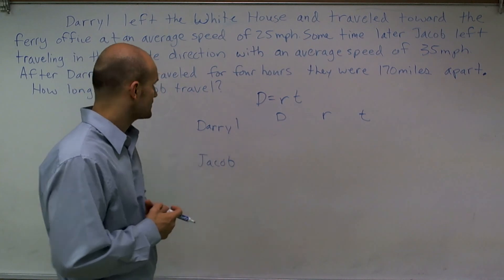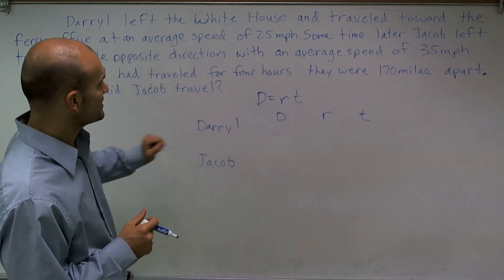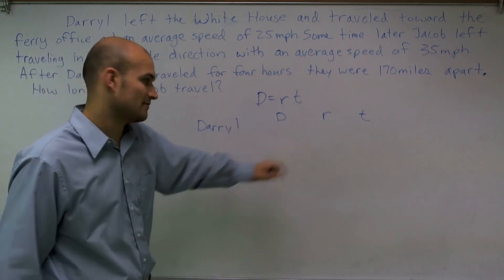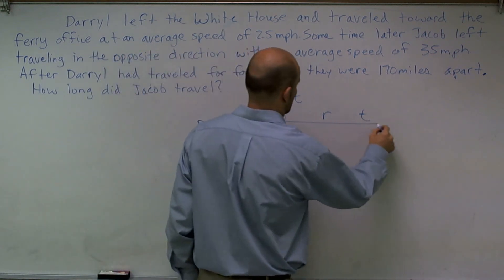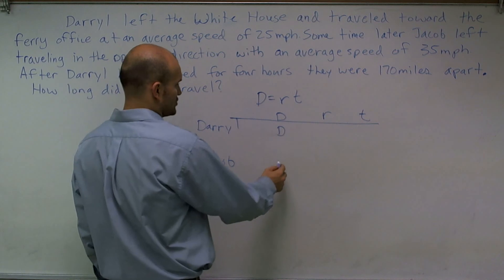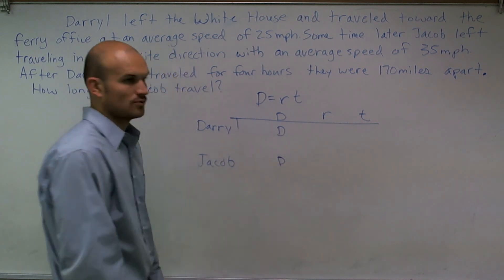For Daryl, the distance, we don't know what his distance traveled, so I'm just going to write D. I don't know how far Daryl traveled. Nor do I know how far Jacob traveled. So I'll put a D there as well.